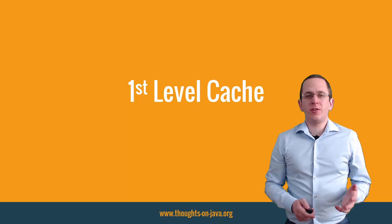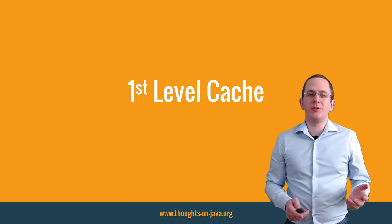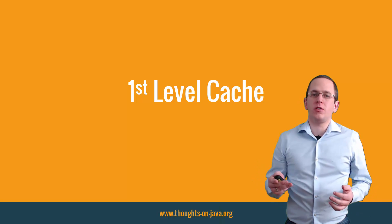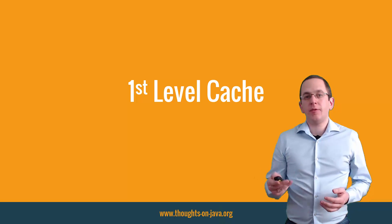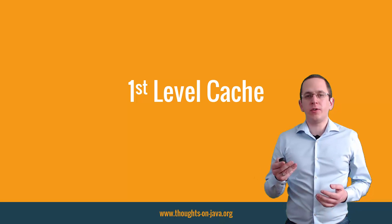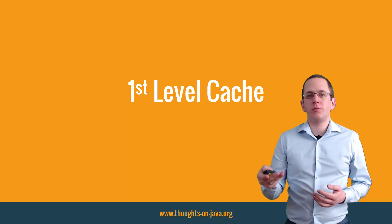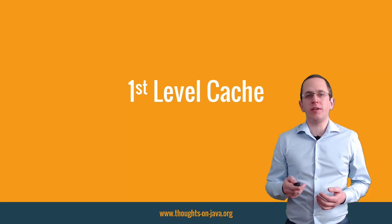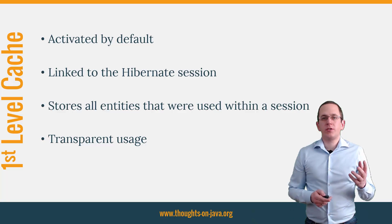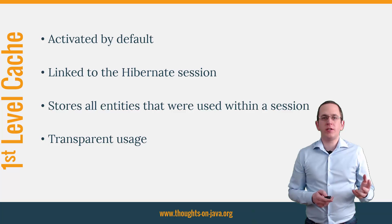The first level cache is used in all of your applications and a lot of developers don't even know about it. The good thing is, you most often also don't need to know or care about it. Hibernate does everything on its own and uses the first level cache internally to optimize the communication with the database. The first level cache is activated by default and Hibernate stores all entities in it which were used within a session.